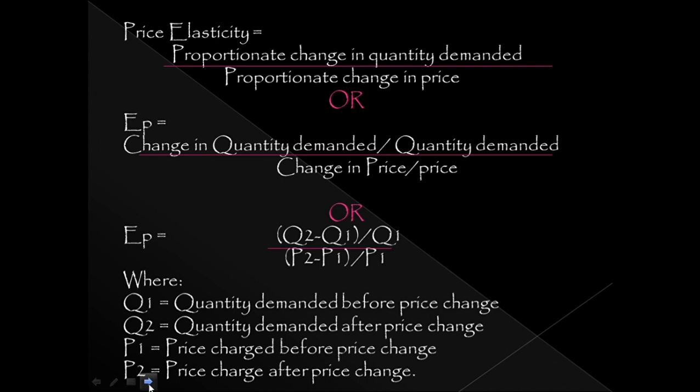For example: P1 price has 10 quantity demanded, so Q1 is 10. Then P2 price has 15 quantity, so Q2 is 5. We apply the percentage change formula using these values.